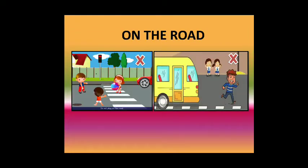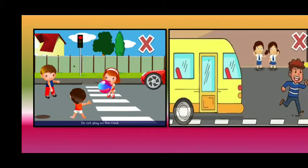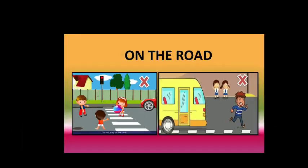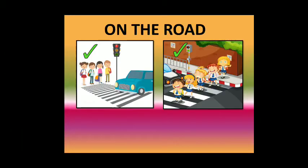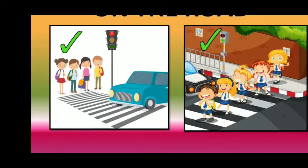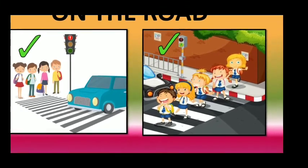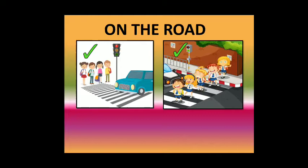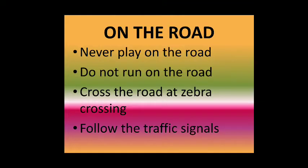Safety rules on the road. Do not play on the road. Do not run on the road. Always follow traffic signals. Always cross the road on the zebra crossing. These are some safety rules that we should follow on the road.